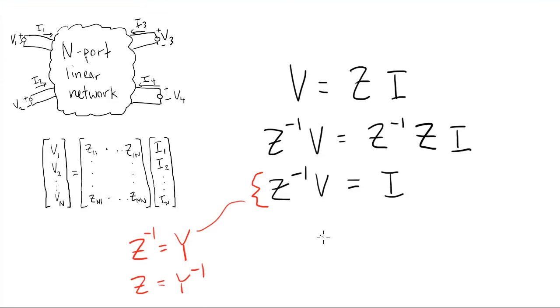Once you get Z or Y, you can solve for any situation of voltages and currents on the network. The matrix contains everything that you need. So that's great, but how do you actually solve for the Z matrix?